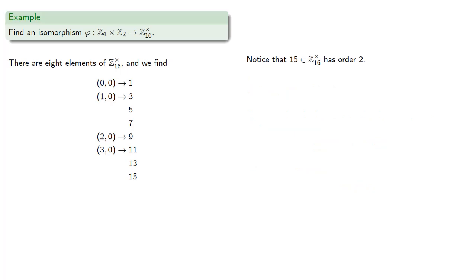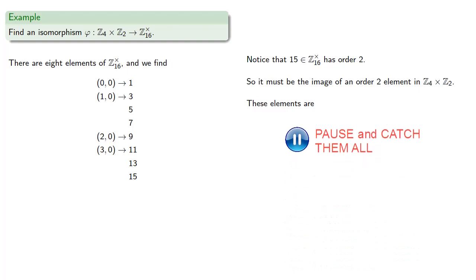We also notice that 15 has order 2, so it must be the image of an order 2 element in Z4 cross Z2. And these elements are... So picking one of these at random, how about (0, 1), let's assign (0, 1) to 15.